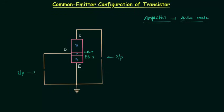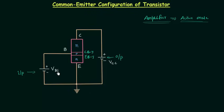In order to reverse bias the collector-base junction, I will use the reverse biasing potential VCC. This is N-type material, so I will connect the positive terminal to the N-type material and negative terminal to the P-type material — plus, minus — and this reverse biasing potential is VCC. We have to forward bias the emitter-base junction, so the P-type material is connected to the positive terminal and the N-type material to the negative terminal — plus, minus — and the forward biasing potential is VBB.